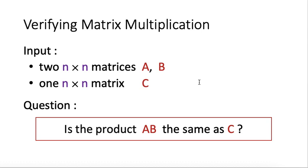The question here is, we want to check whether the product of A, B, so when we multiply A and B together, whether it is the same as C. If you look at this problem, this is really similar to the problem of checking polynomial identities that we have studied in the previous lecture.